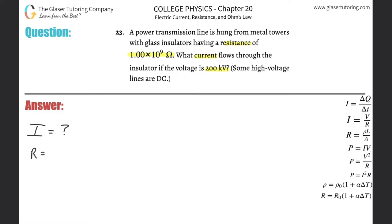The resistance they told us in this particular transmission line is going to be 1.00 times 10 to the 9th ohms. The voltage is going to be 200 kilovolts. But you know that we need this in volts, so simply just take this value and multiply it by 10 to the positive 3 to get that into volts.